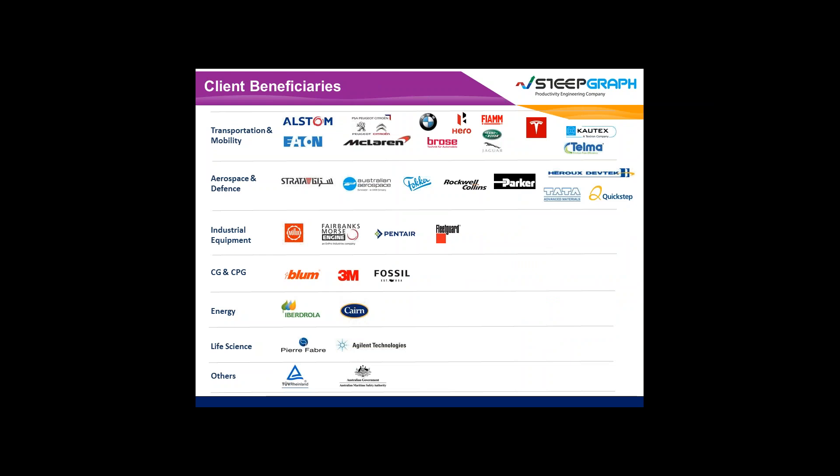In the transportation and mobility segment, we have served organizations like Alstom, Etern, McLaren, BMW, and Brose — automotive suppliers — and at the OEM side, JLR and Tetla. In the aerospace and defense segment, companies like Stata Aerospace, Austin Aerospace, Rocco Collins, and Parker. In the industrial equipment space, Jacob Mueller, Paybank, and Mosey Engines. In other industry segments, companies like 3M, KM Energy, Iberdorla, QA Faber, Agility Technology, GUE, Rhineland, and Australian Maritime Safety Authority.